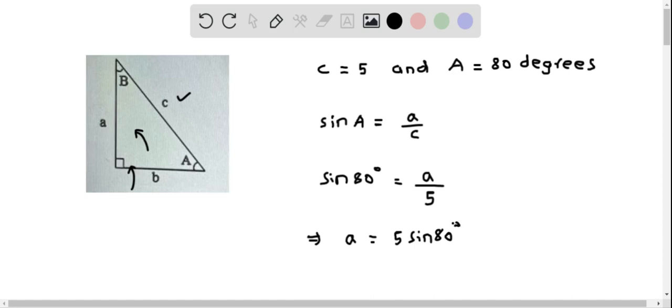And we plug this into the calculator. And when we do that, we get the value as 4.92. So we have determined the unknown side length A to be 4.92.